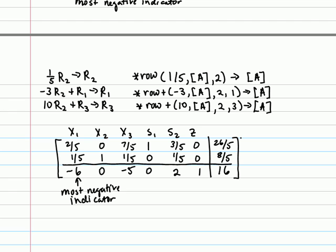Let's consider the non-negative ratios that go with that. 26 fifths divided by 2 fifths is 26 fifths times 5 halves, which is 13. 8 fifths divided by 1 fifth is 8 fifths times 5 over 1, which is 8. That's the smallest non-negative entry.